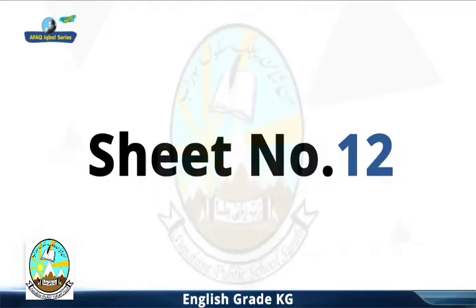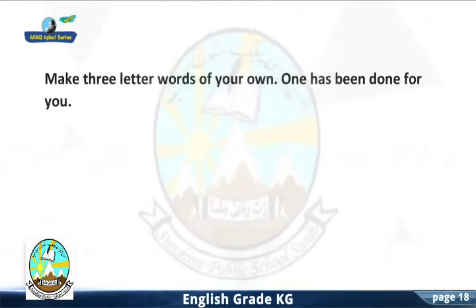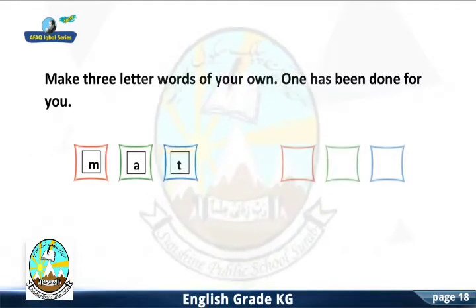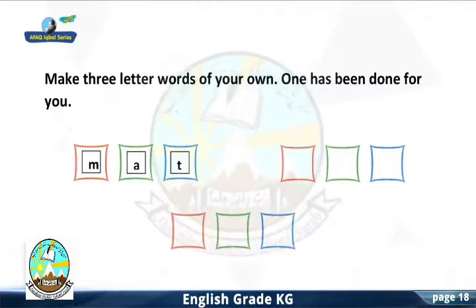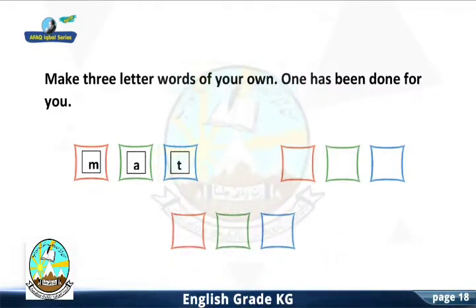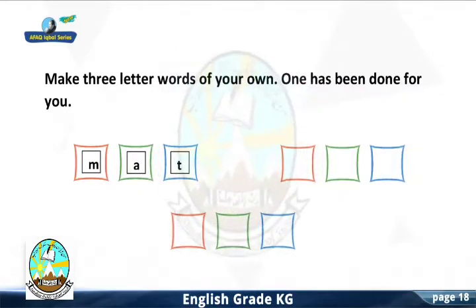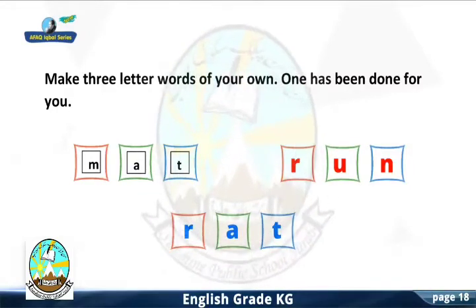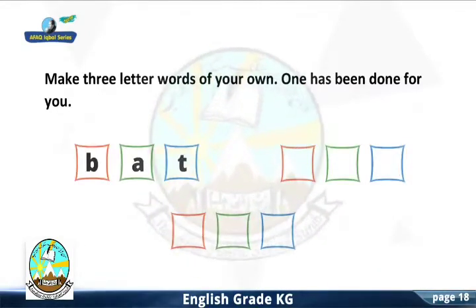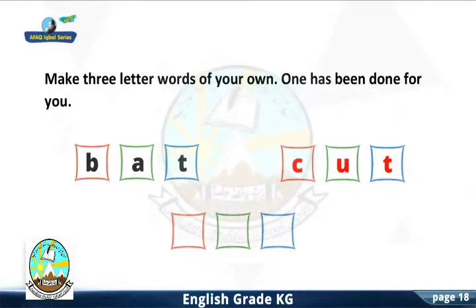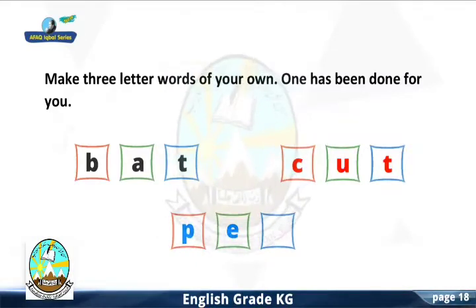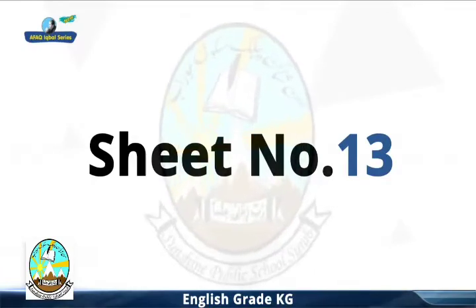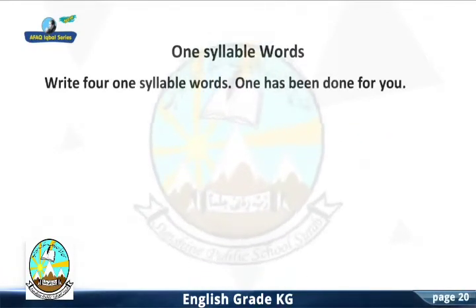Sheet Number 12: Make 3 letter words of your own. One has been done for you. M-A-T: Mat. Very good, you are right. R-U-N: Run. R-A-T: Rat. B-A-T: Bat.